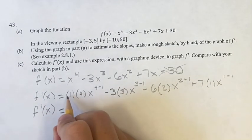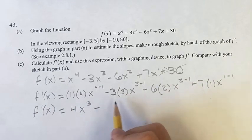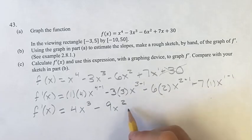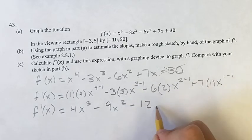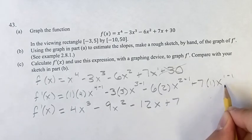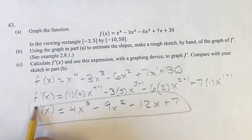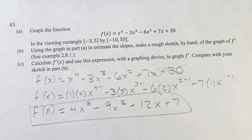Our derivative is equal to four x cubed minus three times three is nine, x to three minus one is squared, minus twelve, x to the one, which is just x, plus seven times x to the zero is just one, so seven times one is just seven. So this is going to be the equation of our derivative.